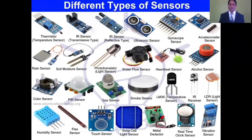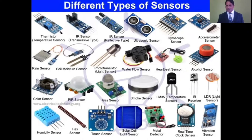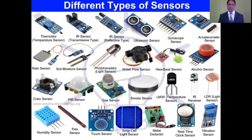Smoke sensor does the same work as a gas sensor. Temperature sensor is the most versatile and widely used sensor nowadays, and it measures the temperature. LDR sensor, or light sensor, is used to switch on and off lights for a particular environment. Humidity sensor is capable to find out the humidity in a particular environment.